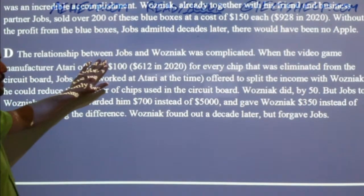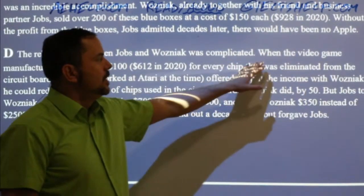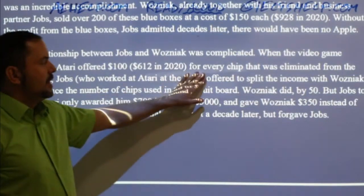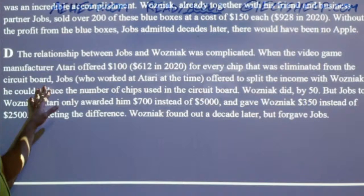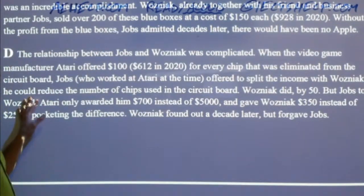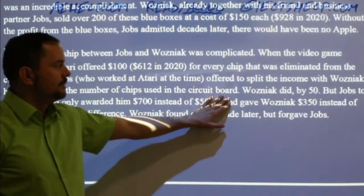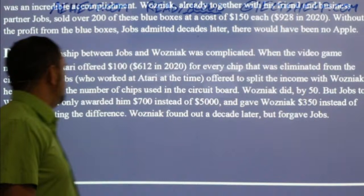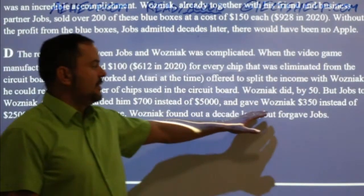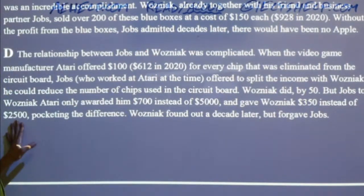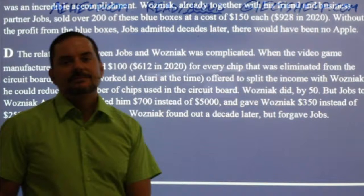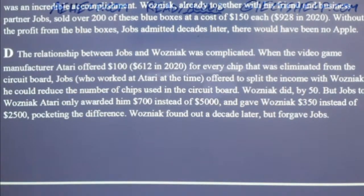The relationship between Jobs and Wozniak was complicated. When the video game manufacturer Atari offered $100 — that's $612 in 2020 — for every chip eliminated from the circuit board, Jobs, who worked at Atari at the time, offered to split the income with Wozniak if he could reduce the number of chips. Wozniak did so by 50, but Jobs told Wozniak that Atari only awarded him $700 instead of $5,000, and gave Wozniak $350 instead of $2,500, pocketing the difference. Wozniak found out a decade later but forgave Jobs.